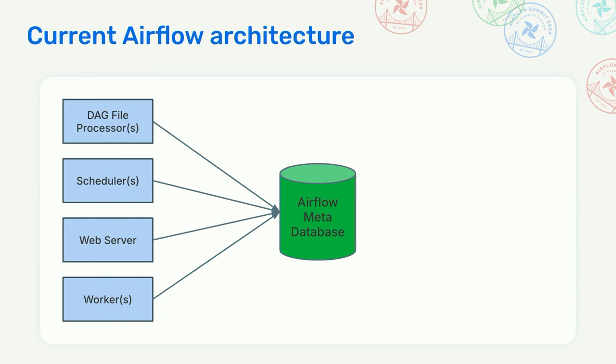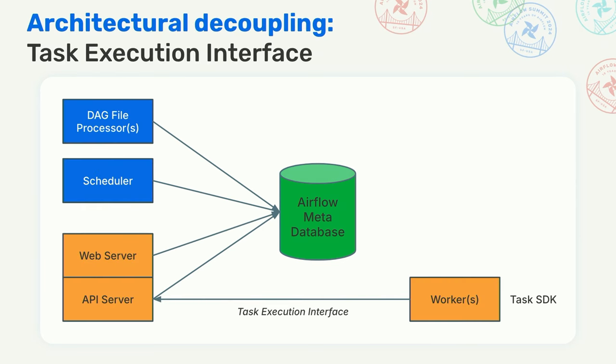Why is there a problem? Task isolation is a problem because every task, written in Python, has access to the shared Airflow metadata base and can execute SQL, which can perform read-write operations on the shared database. Clearly, this could be a self-inflicted issue because of somebody making a mistake in their SQL, but in a large organization with data engineers sharing the same Airflow deployment and therefore the same metadata base, the potential for unintended consequences is significant.